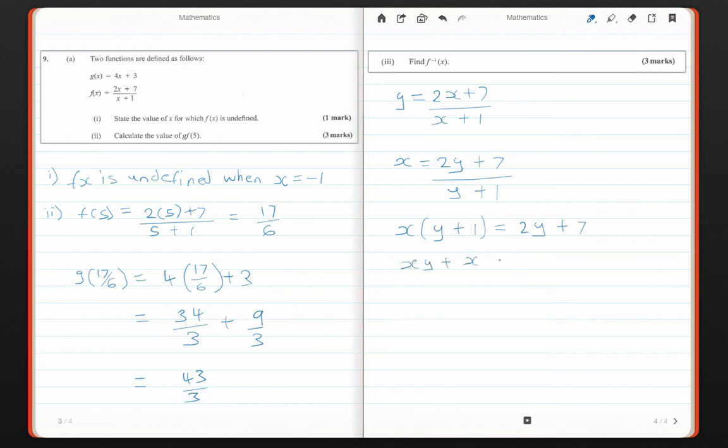xy plus x is equal to 2y plus 7. You bring over all the terms that have y and you send across now the other terms that don't have y in it. So now on this side, on the left-hand side, we should have xy minus 2y is equal to 7 minus x. And we factorize at this point. We want to take out y. So y would be equal to x minus 2 is equal to 7 minus x.